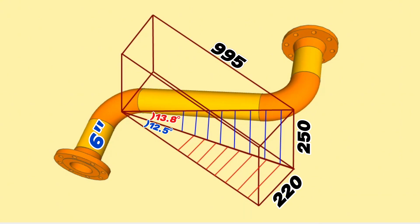In this video we will show step by step how to calculate the distance between the centers of the elbows in the pipeline, the cut elbows length, and the length of the pipe piece between these elbows in the piping isometric drawing. Let's start the pipe tutorial video.